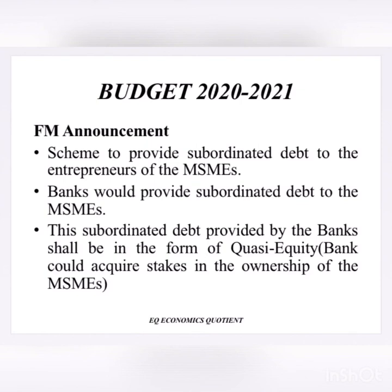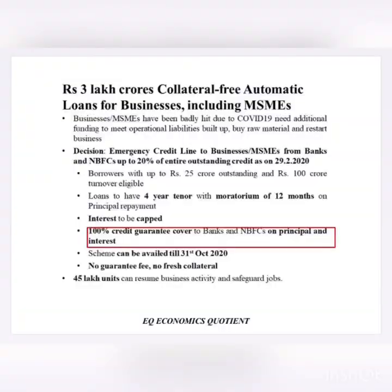Banks could provide subordinate debt to MSMEs. This subordinate debt provided by the banks shall be in the form of quasi equity — that is, banks could acquire stocks in the ownership of an MSME if the MSME fails to repay.